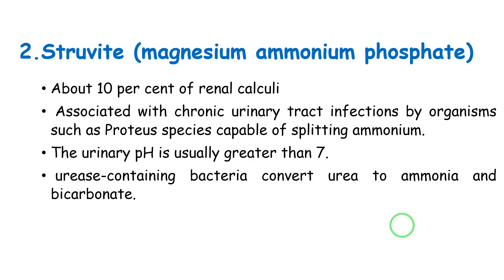The second type of renal calculi is the struvite stone, also called magnesium ammonium phosphate stone. These form about 10% of renal calculi and are usually associated with chronic urinary tract infection by urease-containing bacteria. Urease splits urea into ammonia and bicarbonate, resulting in an alkaline pH greater than 7. At this pH, the formation of magnesium ammonium phosphate stones is favored.